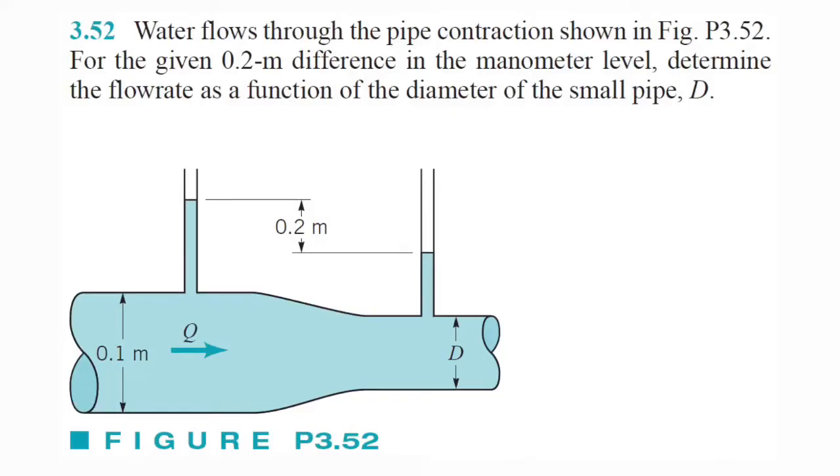Alright, so what's going on everybody? So this one's a little bit different. We got to solve it in terms of a diameter of a value we don't know. But the problem reads, water flows through the pipe contraction for the given 0.2 meter difference in the manometer level, determine the flow rate as a function of the diameter of the small pipe D. So this one's going to be tedious in terms of algebra, not really engineering. It's just a bunch of math, but let's go ahead and get started.